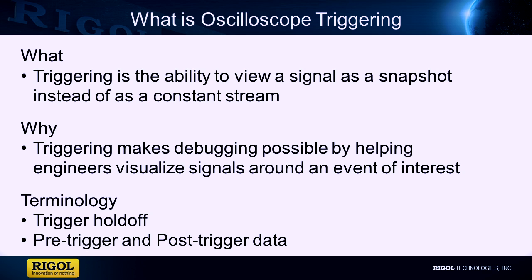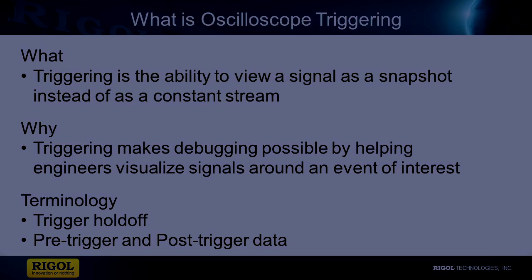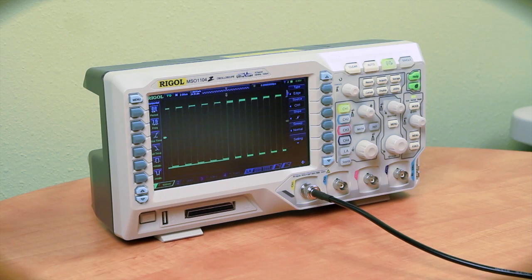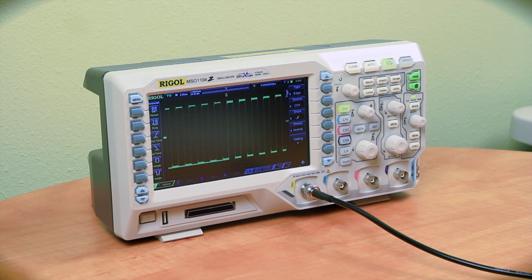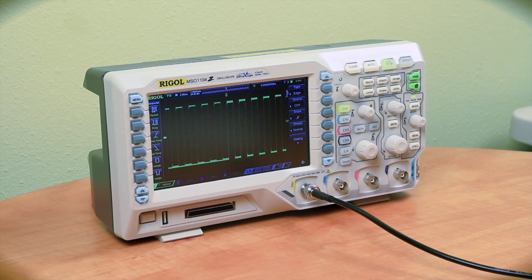There are several important settings to discuss before we discuss the variety of trigger methods. First, trigger holdoff is a setting used with many of our trigger types. This sets the minimum time between two triggers. This is used to make sure the instrument doesn't trigger on an unwanted signal between the trigger events we want to capture.